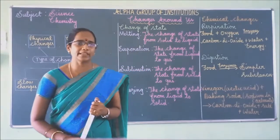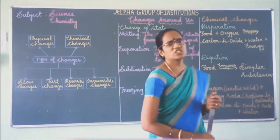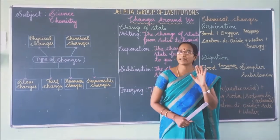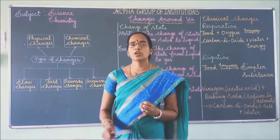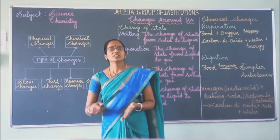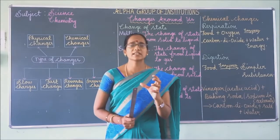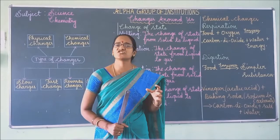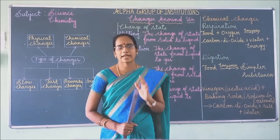Next is non-periodical change. Non-periodical changes are changes that do not occur at regular intervals. For example: tsunami, accidents, landslide, flood, and earthquake. These are examples of non-periodical change because these changes will not occur at regular intervals of time.